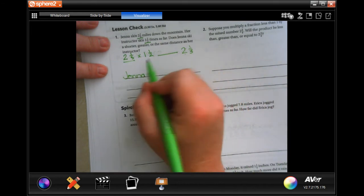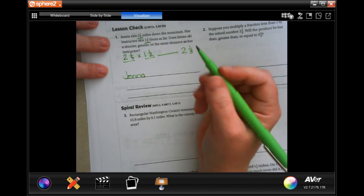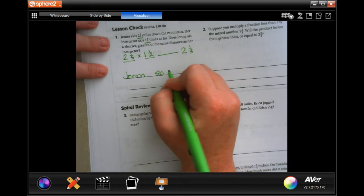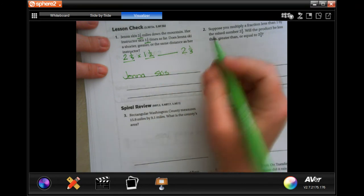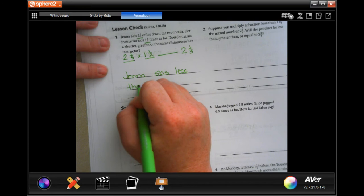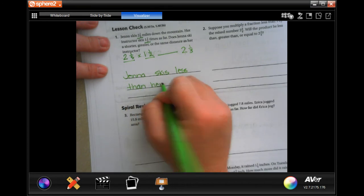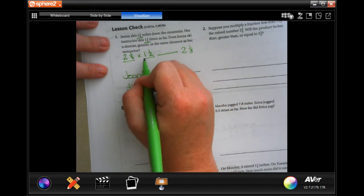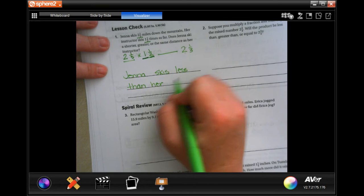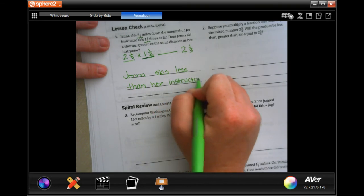Jenna skied this far, her instructor did this far, and this far. So, Jenna skied less than her instructor. Because that means her instructor scored just as much as Jenna did right here, and then that far, too. Instructor.